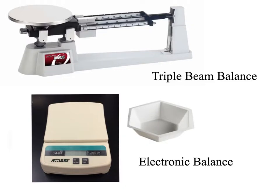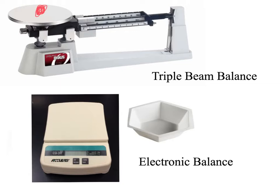There are two different devices we'll be using to determine the mass of things in the lab. The first is called a triple beam balance — you put the item you want to determine the mass of on the platform, then slide the weights over until the line matches up, and you can read the scales to determine the mass. The electronic balance has the same function — it also determines the mass of an item — but you simply put the item on it and press a button, and it tells you the mass in the readout display.